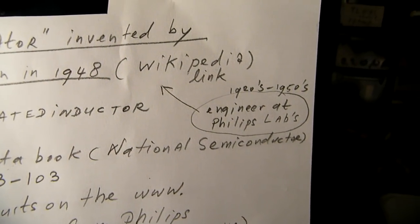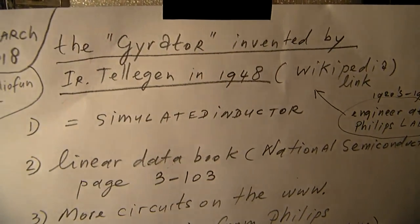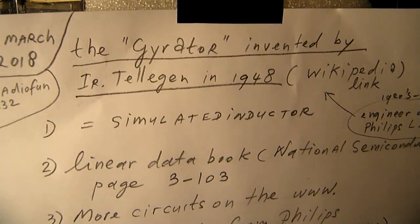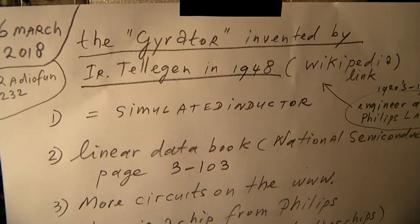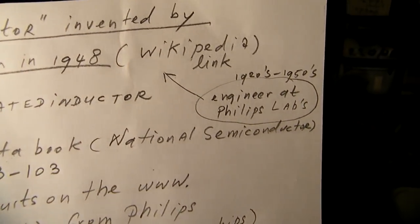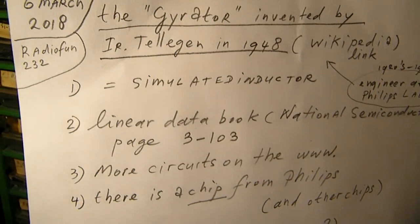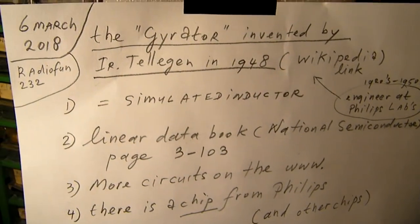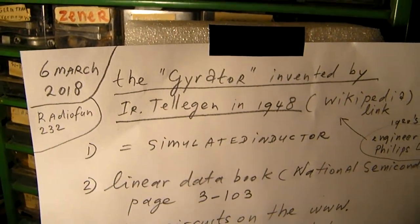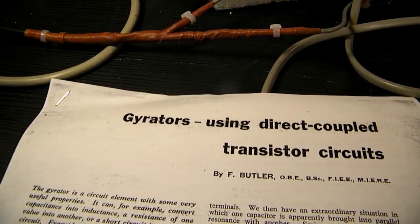That was a very scientific laboratory where all kinds of circuits, before they entered the consumer area, were tested in a pure scientific way. Many inventions were made in Eindhoven in the 1920s, 1930s, 1950s, etc. The gyrator is a very interesting element because it simulates an inductor.